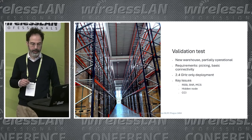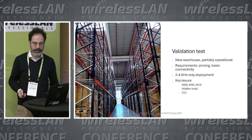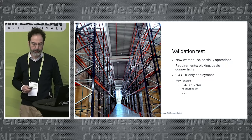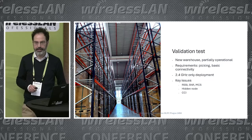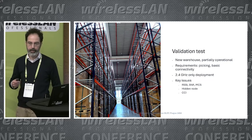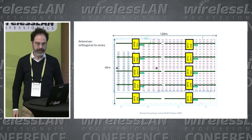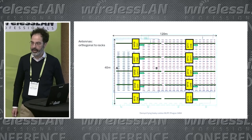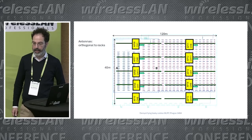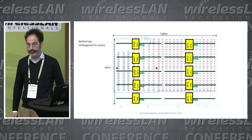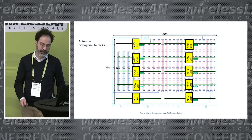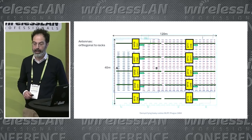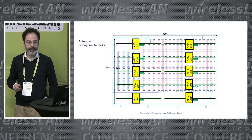We went to a newly finished warehouse that was not fully operational — they had started to populate the racks with pallets and products. We wanted to assess network performance and look for issues, particularly obvious ones given it's a 2.4 GHz network with simple requirements and basic connectivity for barcode scanners. This is the layout of the floor plan: yellow squares are access point positions, green lines show the antenna runs crossing across the shelves and racks — a popular design solution that minimizes cable runs and access point count.